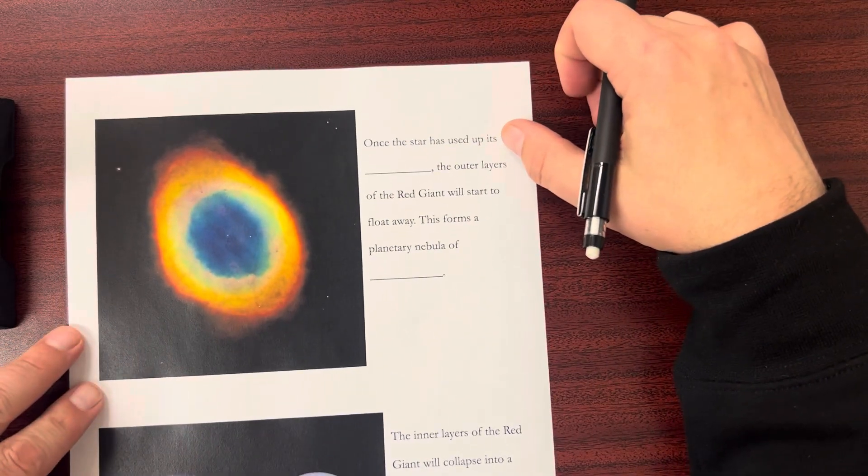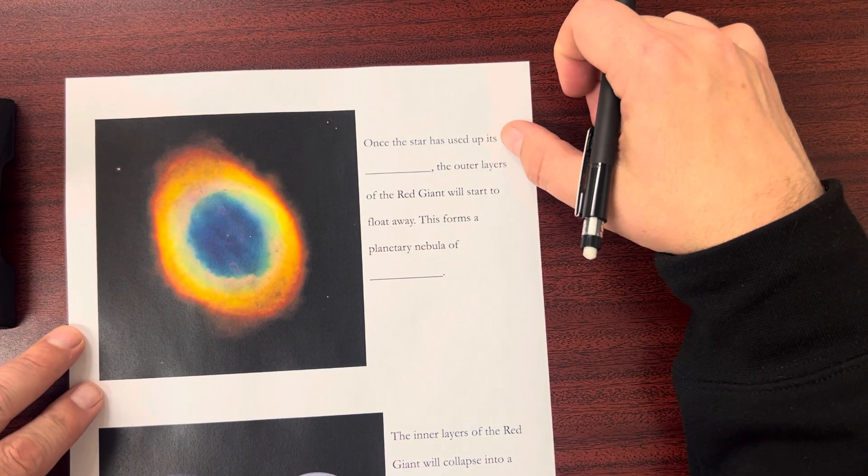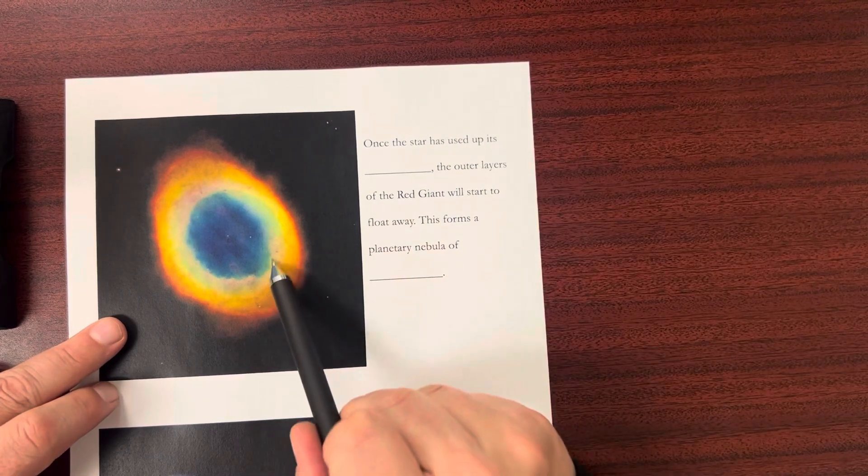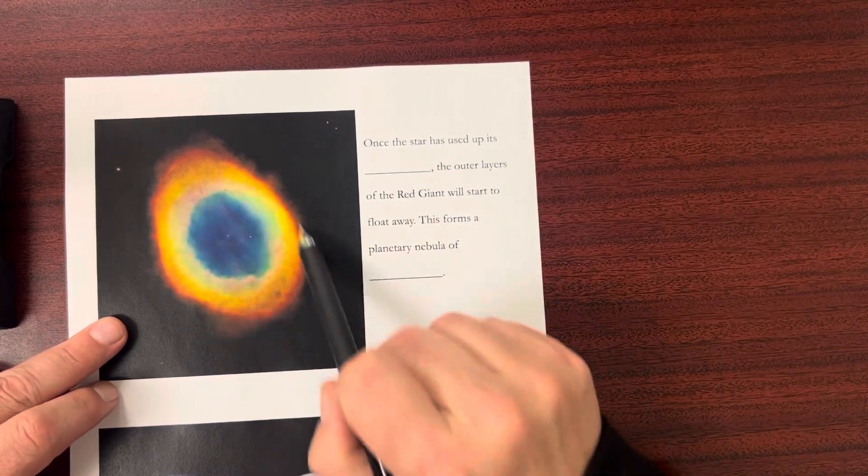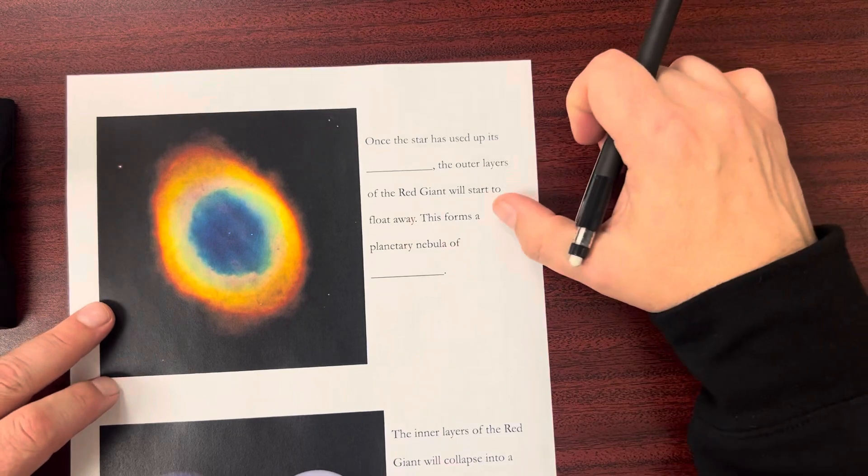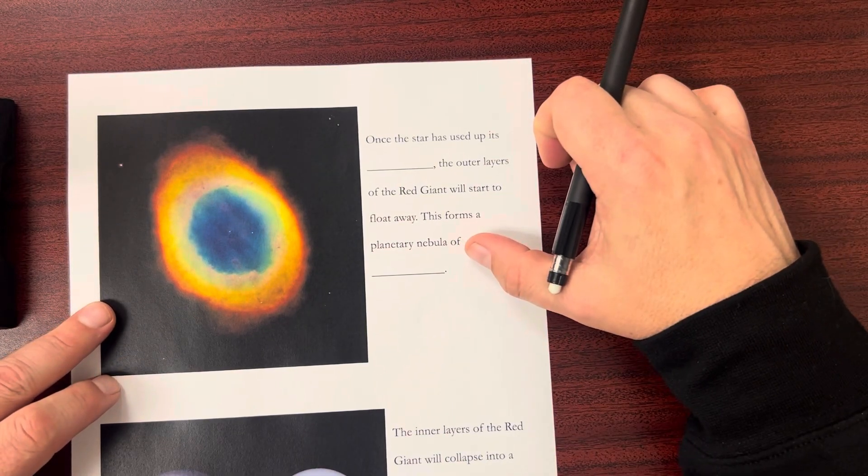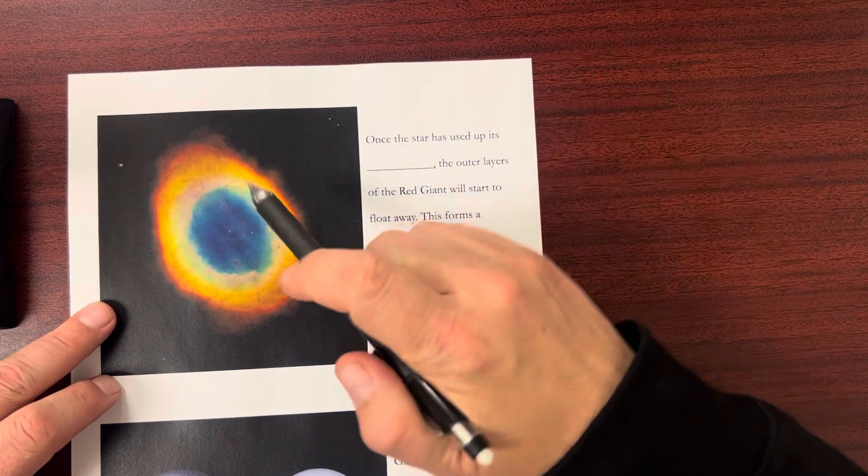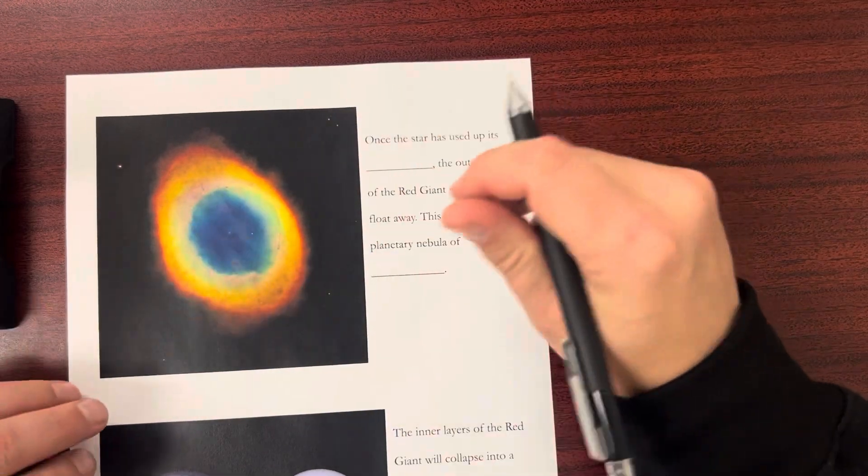Once the star has used up its fuel, the outer layers of the red giant will start to float away. This forms a planetary nebula of gas. That's what this is—the planetary nebula.